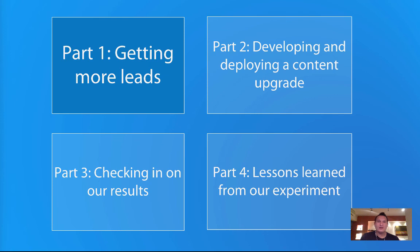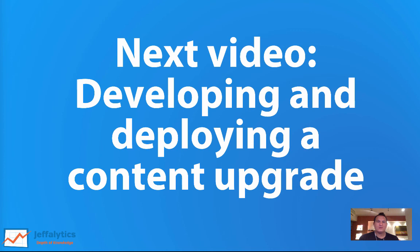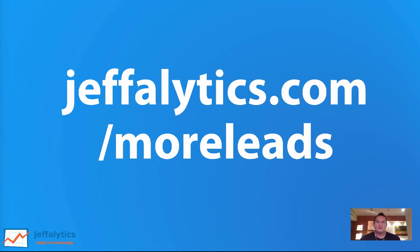This was part one: getting more leads. I showed a real live case study — 40 new email addresses every seven days, which is so many I actually need to upgrade my email plan. Part two will show you how to do it step by step on screen. Part three checks in on results after a few weeks. Part four is reflection — what did we learn, what content upgrades work best? Make sure to read the companion article at jefflytics.com/more-leads. Talk to you next week!